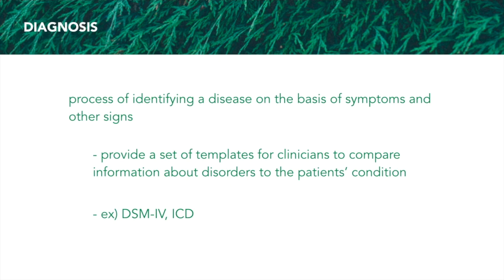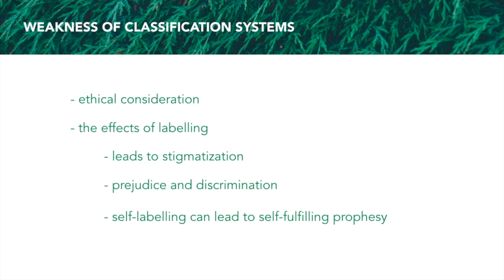Some examples are the DSM-IV, or the Diagnostic and Statistical Manual of Mental Disorders, its fourth edition, in which there are a list of symptoms for 300 mental disorders, and the ICD which references the cause of disorders. So what are some of the weaknesses of the classification systems?